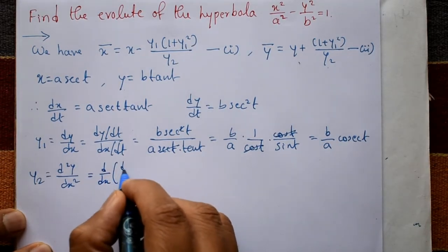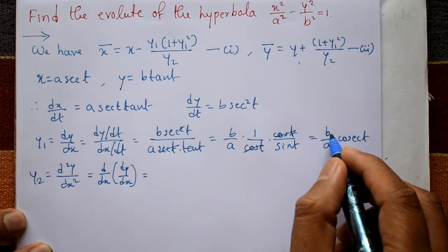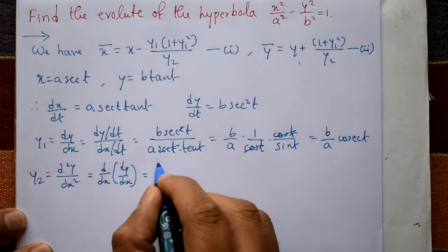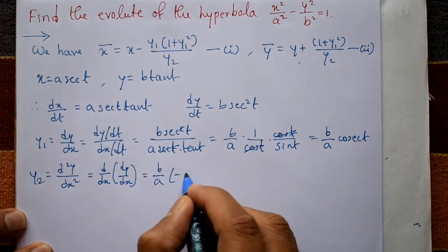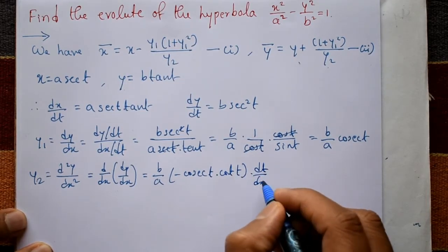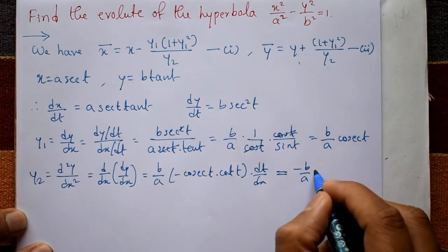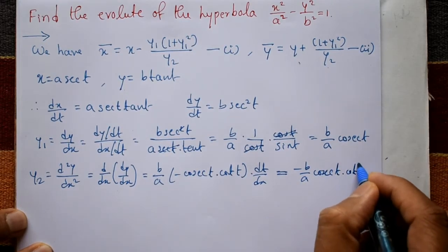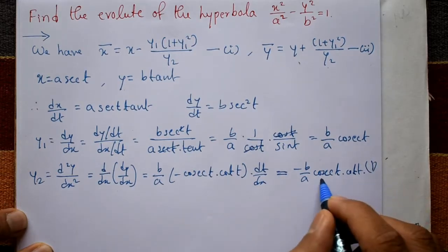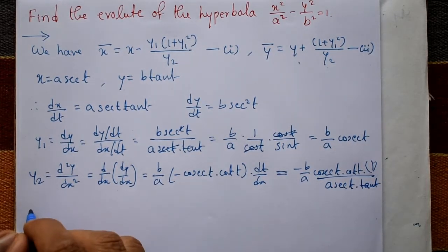For y2, we compute d/dx of dy/dx, which equals d/dx of (b/a · cosec(t)). Differentiating cosec(t) gives -cosec(t)·cot(t)·dt/dx. Now dt/dx = 1/(dx/dt) = 1/(a·sec(t)·tan(t)).